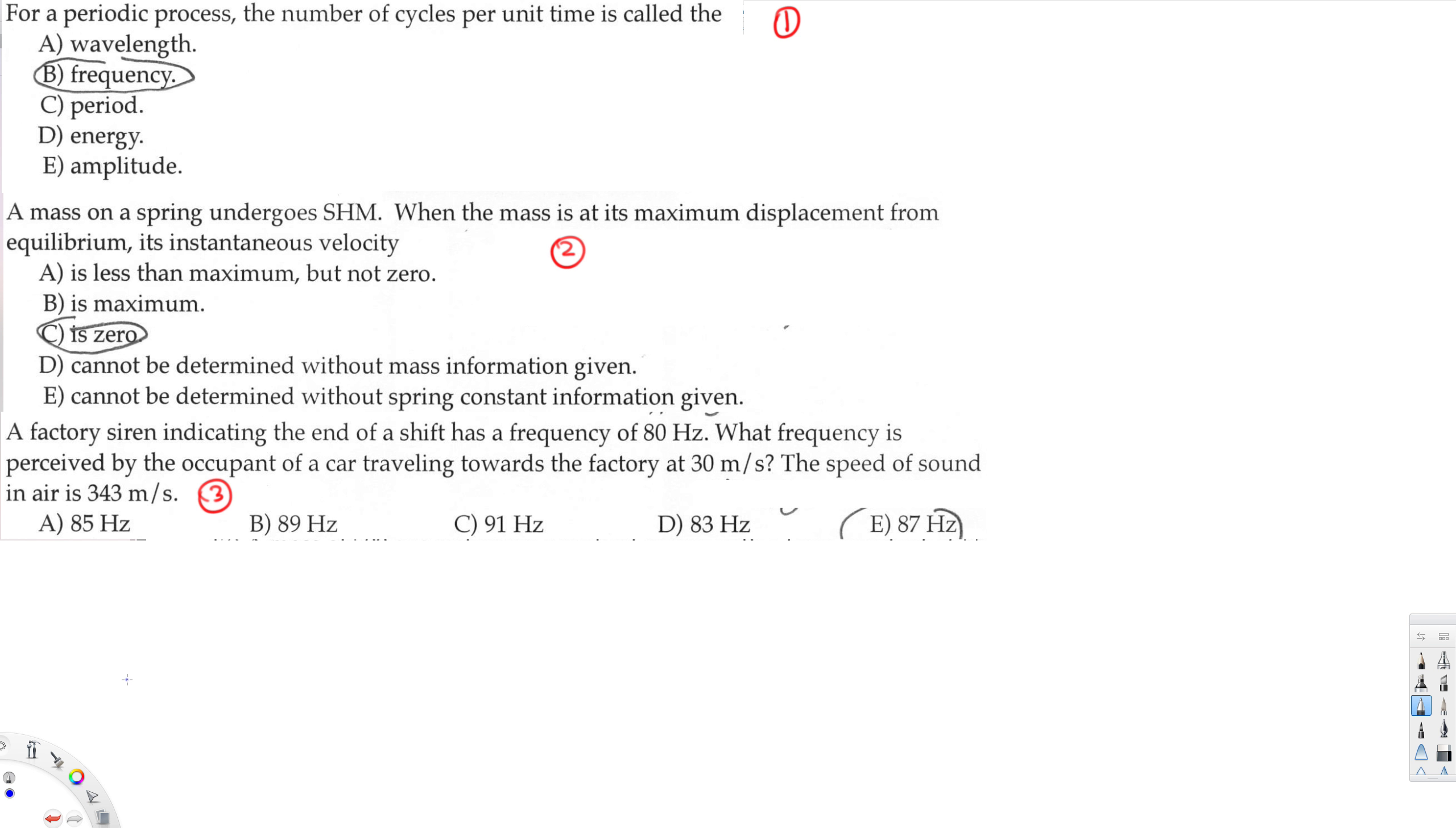Hey what's going on guys, let's do this problem right here. The first question is asking: for a periodic process, the number of cycles per unit time is called the what? So we have wavelength, frequency, period, energy, and amplitude. So cycles per unit time, number of cycles per unit time.